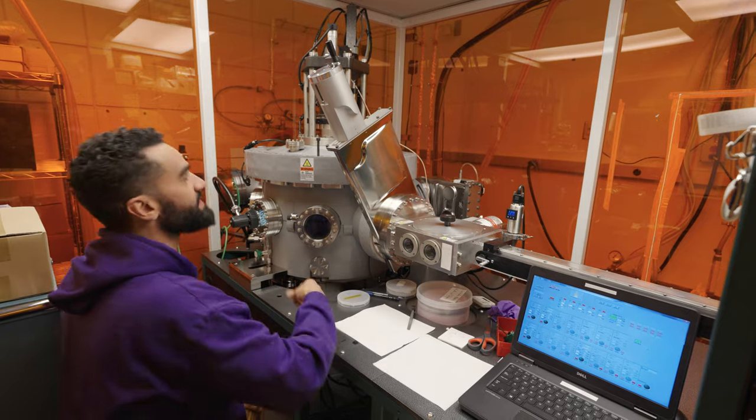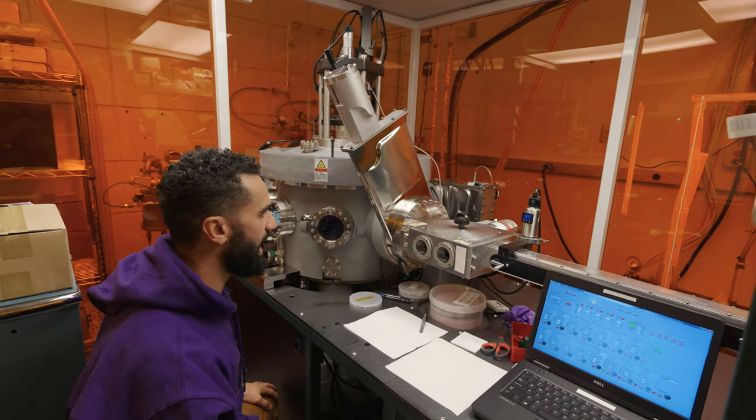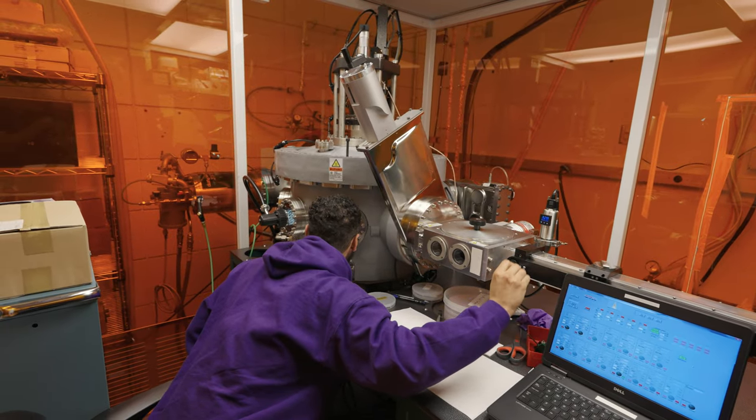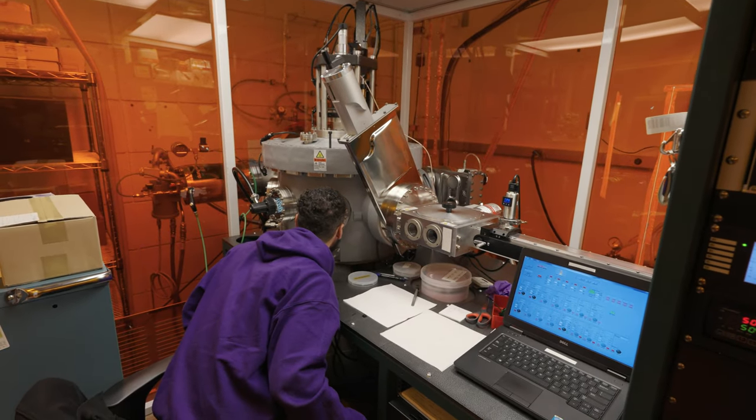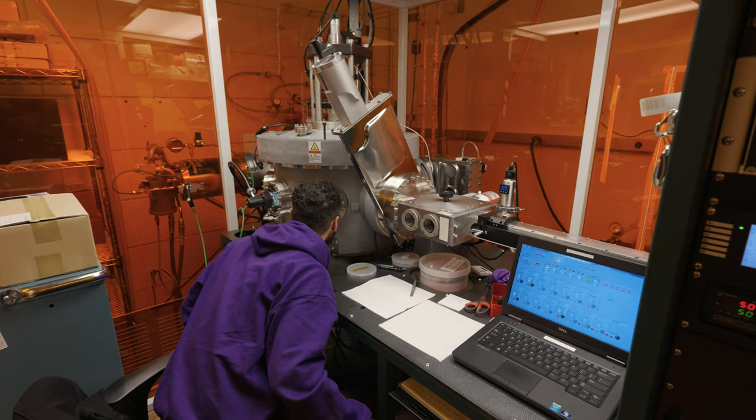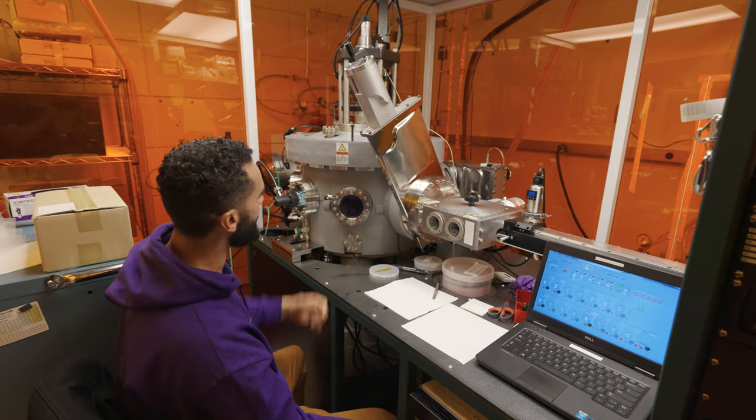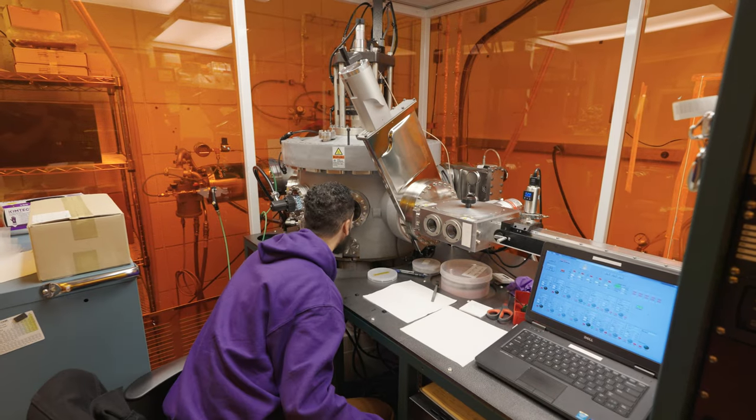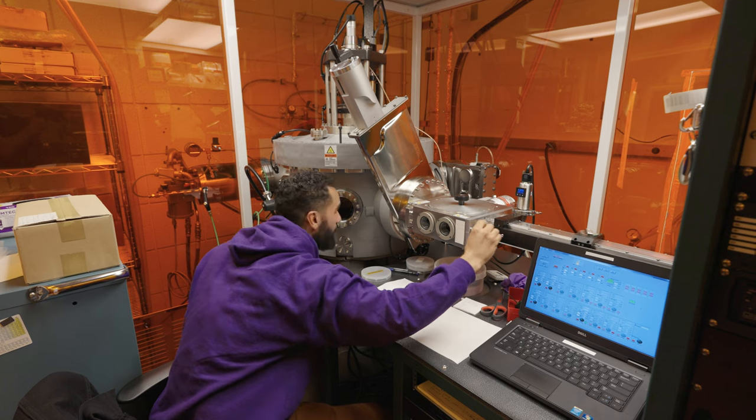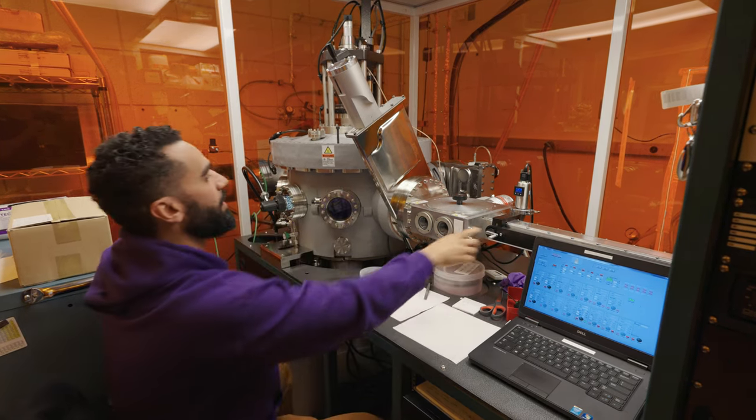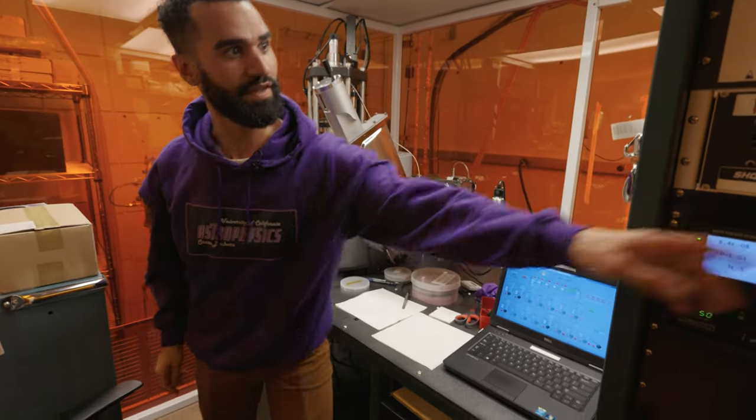We can now open the load lock valve and push the arm in. Now that this transfer arm is centered, I'm going to lower the center stage. Now that I'm unlatched from the wafer carrier, I'm lifting the center stage up so that I can clear enough room to retract the transfer arm. Now that I've cleared enough room, I'm going to pull this back out and we can see the carrier and wafer is here. We can close this and see the film that we've deposited.